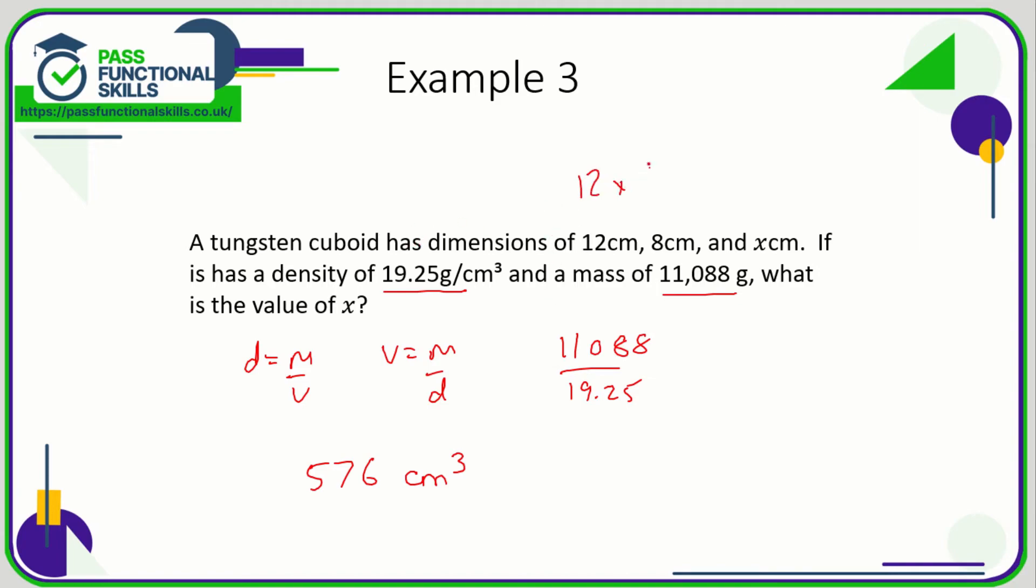Now to get a volume from a cuboid you would have to multiply 12 times 8 times, and in this case times an unknown which is x. And 12 times 8 times x is going to equal 576. First of all let's just work out 12 times 8: that's 96. And 96 times x means 96x, so 576 cubic centimeters equals 96 lots of x, or might be easier thinking of it as 96x equals 576.